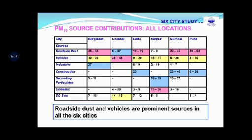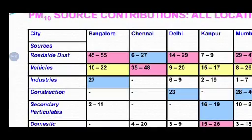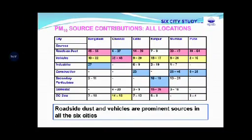Another table includes the PM10 source contribution. Analyzing it critically, we find that roadside dust and vehicles are the major sources for PM10, which is a critical issue. In the case of Kanpur, domestic activities were also contributing significantly to PM10. In general, roadside dust and vehicles are the prominent sources in most of these studies.